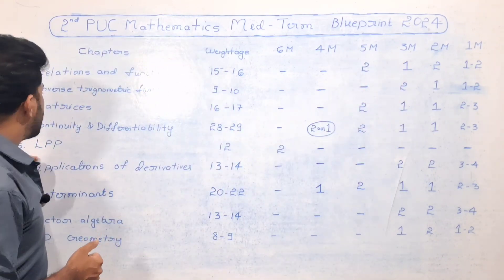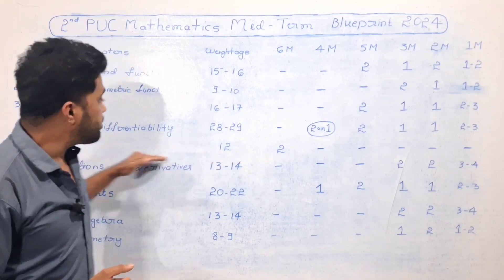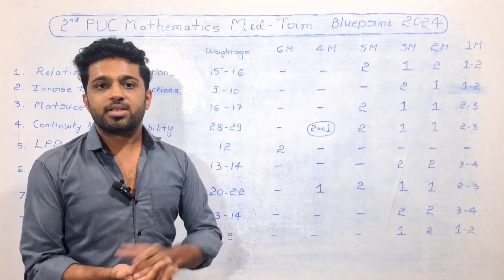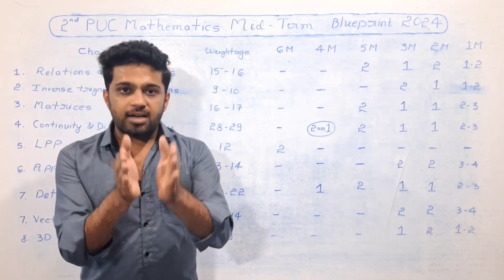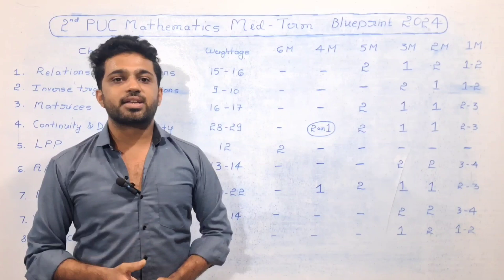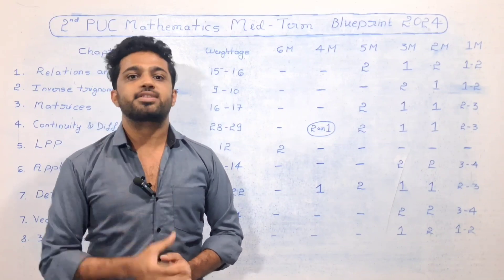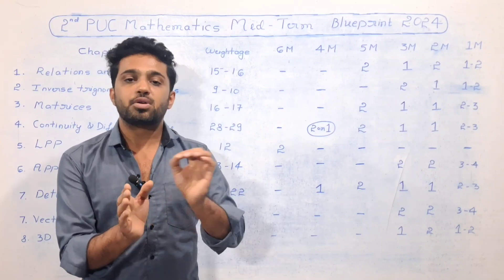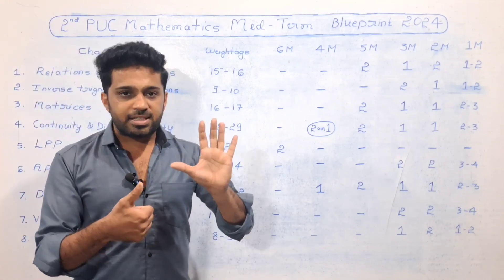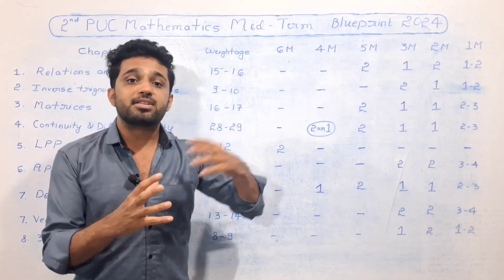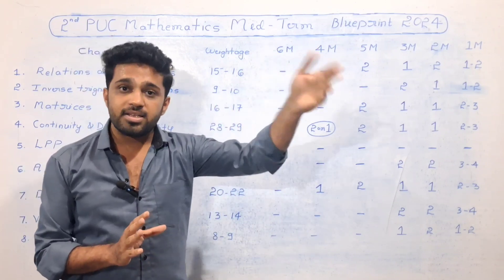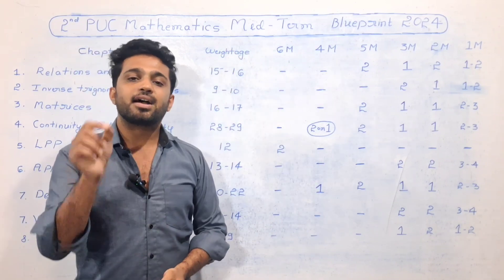The next section is LPP — Linear Programming. This chapter carries 12 marks. In the final exam, Question number 46 is a 6-mark question from this chapter, and it is 100% certain to appear. One question from LPP is guaranteed in the question paper.